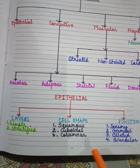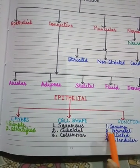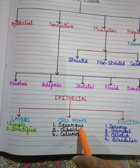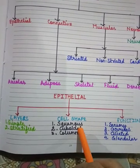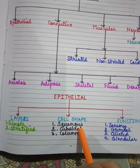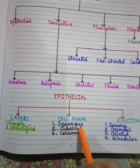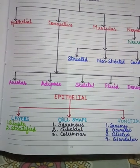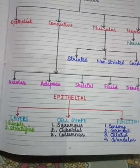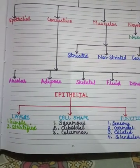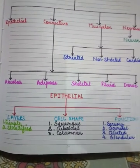Next is cuboidal epithelial tissue. These are found in some parts of kidney tubules and in some glandular ducts, including those of salivary glands and pancreatic ducts.